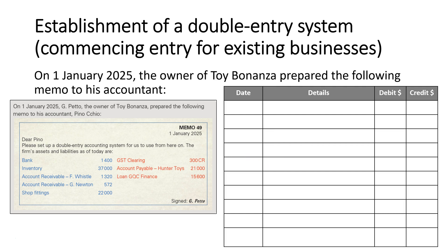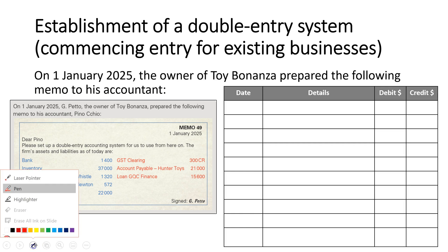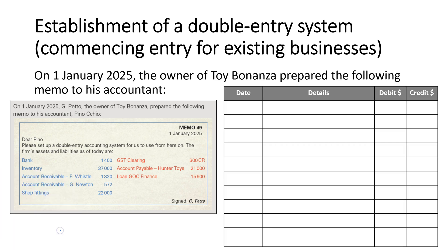Let's look at an example where we are commencing a double entry accounting system for an existing business. We've taken this example from the Cambridge text. On the 1st of January 2025, the owner of Toy Bonanza prepared a memo to his accountant: "Please set up a double entry accounting system for us to use from here on. The firm's assets and liabilities as of today are..." and then it gives us a list.